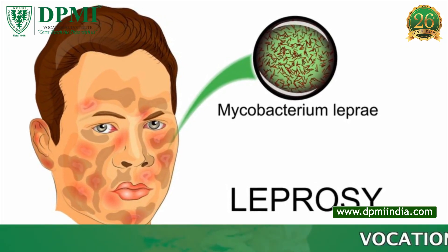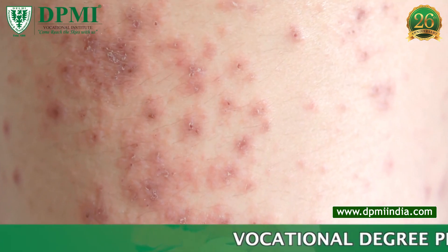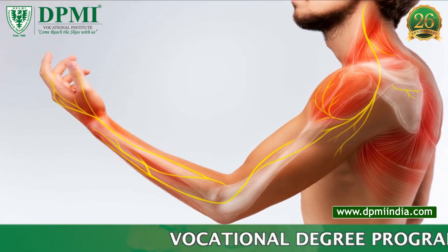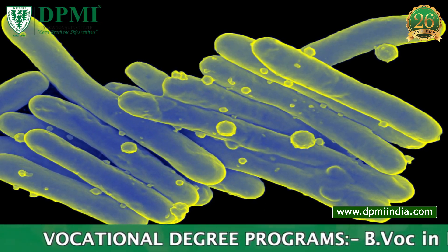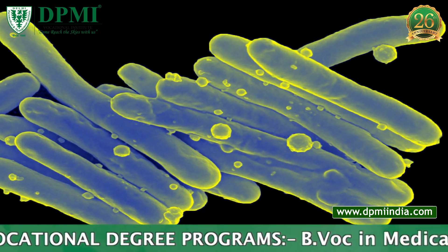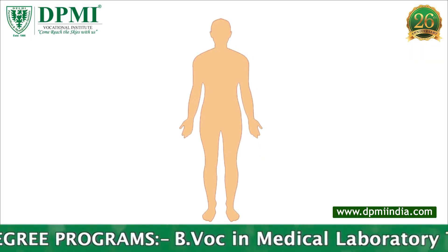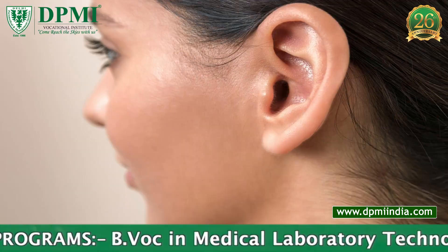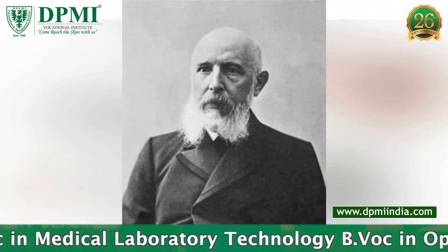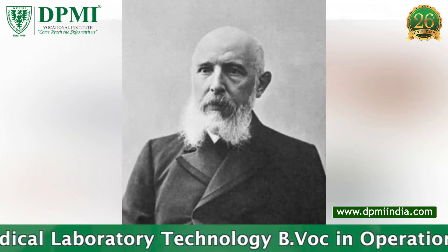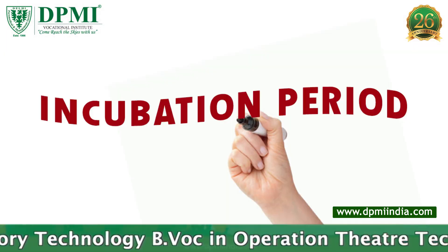Leprosy is a chronic granulomatous disease characterized by skin lesions, muscle weakness, and numbness in arms, feet, and legs. It is caused by a gram-positive bacterium known as Mycobacterium leprae, affecting cooler parts of the body such as the nose, ears, and fingers. Lepra bacilli was first observed by Hansen in 1868, hence it is also known as Hansen's disease.